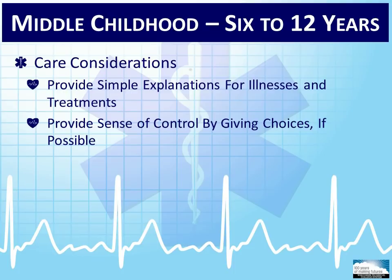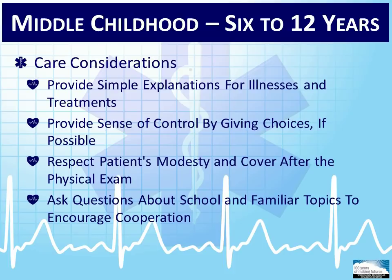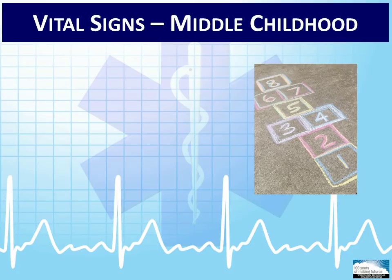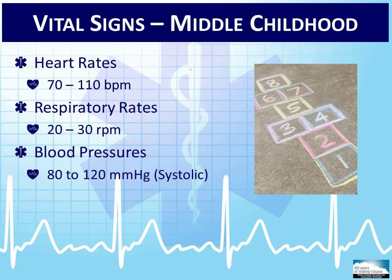Always respect the patient's modesty and recover any exposed areas after the physical exam. Engage the child in conversation by asking questions about school or topics familiar to them. The typical vital signs for a child in middle childhood are as follows: heart rates range from 70 to 110 beats per minute, respiratory rates range from 20 to 30 respirations per minute, systolic blood pressures range from 80 to 120 millimeters of mercury, and temperature begins to approach a normal adult temperature of 98.6 degrees Fahrenheit.